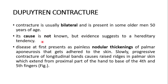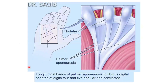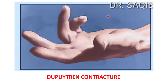The disease first presents as painless nodular thickenings of the palmar aponeurosis that become adherent to the skin. Slowly, progressive contracture of longitudinal bands causes raised ridges in the palmar skin, which extend from the proximal part of the hand to the base of the fourth and fifth fingers. These are the nodules, as I have shown you — this is the condition of Dupuytren's contracture.